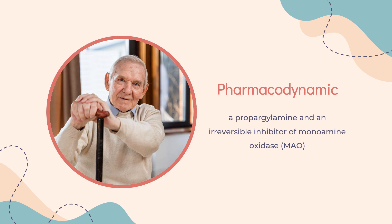In ex vivo animal studies in brain, liver, and intestinal tissues, rasagiline was shown to be a potent, selective, and irreversible monoamine oxidase type B (MAO-B) inhibitor. At the recommended therapeutic doses, rasagiline was also shown to be a potent and irreversible inhibitor of MAO-B in platelets. The selectivity of rasagiline for inhibiting only MAO-B and not MAO-A in humans, and the sensitivity to tyramine during rasagiline treatment at any dose, has not been sufficiently characterized to avoid restriction of dietary tyramine and amines contained in medications.